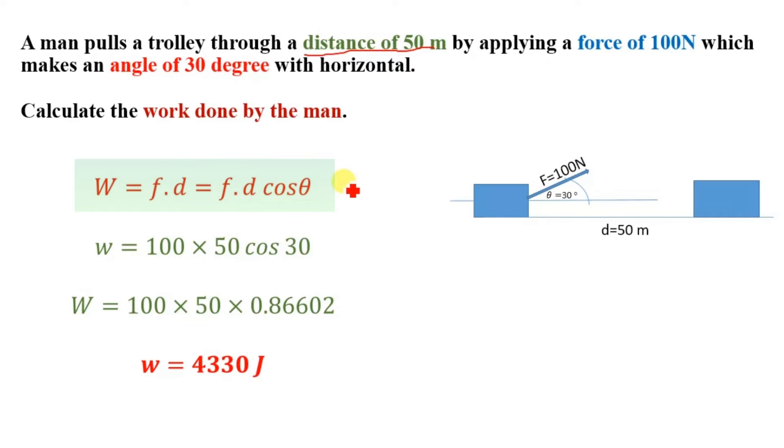Now here, the motion is along the x-axis and there is no motion along the y-axis, so only the x-component of the force is responsible for the motion. So we have W = F·d cos θ. Substituting the values...